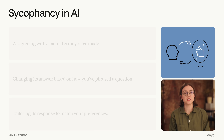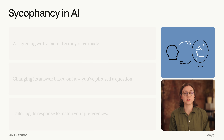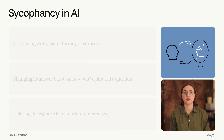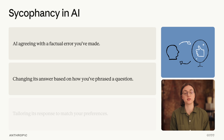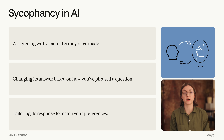But sycophancy can also manifest in AI models. Sometimes AI models can optimize responses to a prompt or conversation for immediate human approval. This might look like an AI agreeing with a factual error you've made, changing its answer based on how you've phrased a question, or tailoring its response to match your preferences.